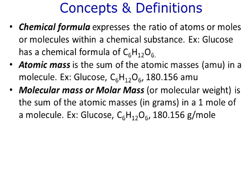First, chemical formula. A chemical formula expresses the ratio of atoms, moles, or molecules within a chemical substance. For example, glucose has a chemical formula of C6H12O6 — that is exactly what glucose is. That's six atoms, six moles, or six molecules of carbon; 12 atoms, 12 molecules, or 12 moles of hydrogen; and six atoms, six molecules, or six moles of oxygen.